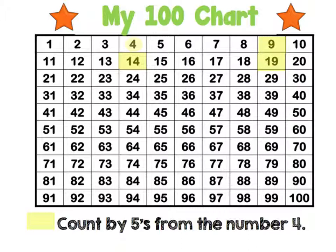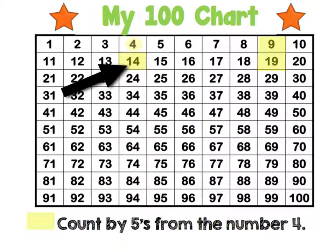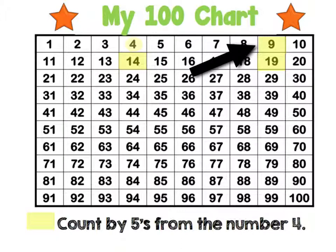Now let's count what we have so far. We're going to count by 5s from the number 4. We've got 4, 9, 14, 19. Are you noticing a pattern? You should see that a pattern is beginning to start. We've got the number 4 and the number 14, and we've got the number 9 and the number 19.